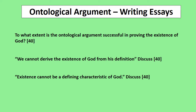First one: 'To what extent is the Ontological Argument successful in proving the existence of God?' That's an easy one to recognise because it basically says, does the Ontological Argument prove that God exists? Second one: 'We cannot derive the existence of God from his definition.' Because the Ontological Argument is the only argument which tries to argue that God must exist by definition, this question is basically about the Ontological Argument — it's asking, does the Ontological Argument work?